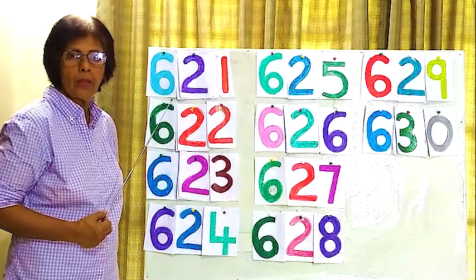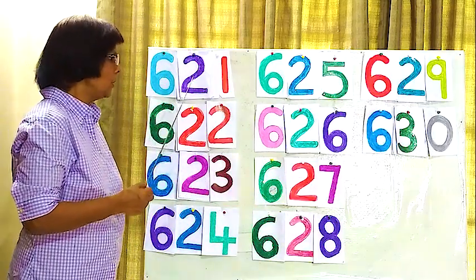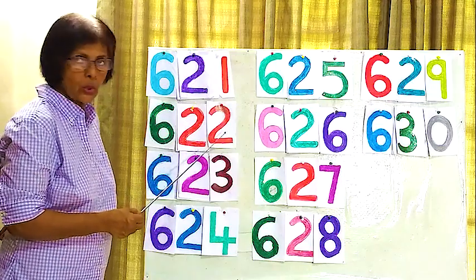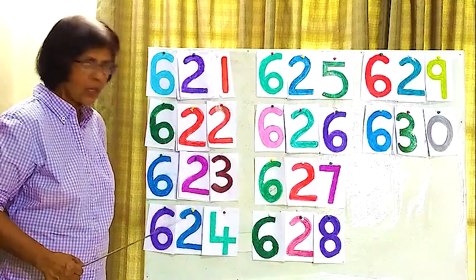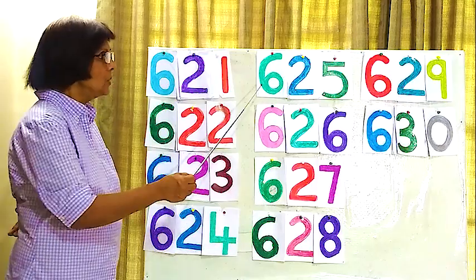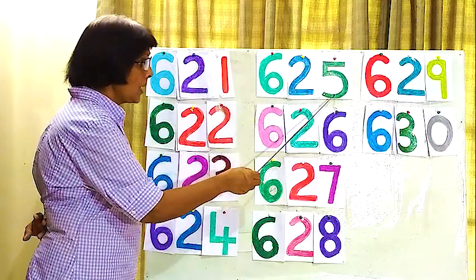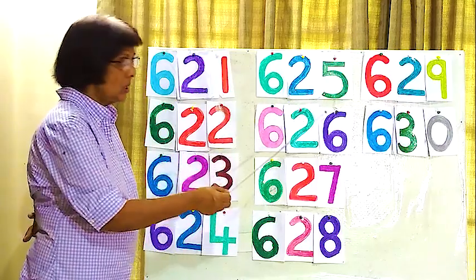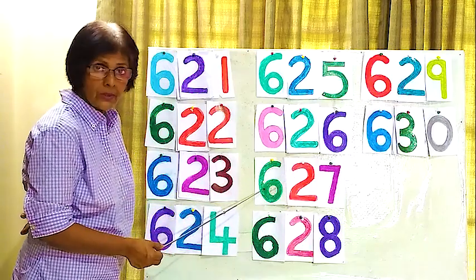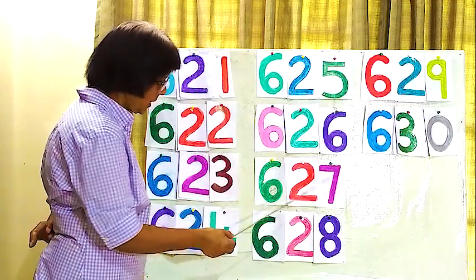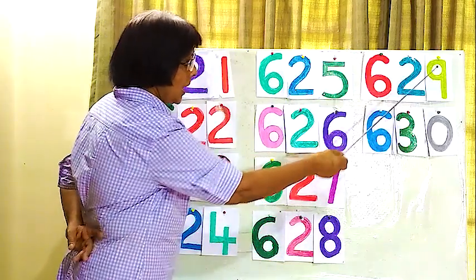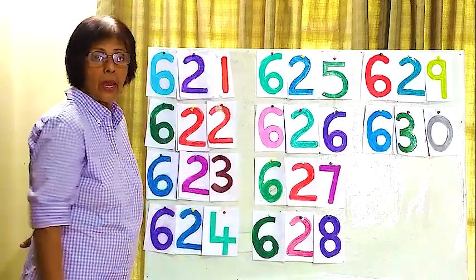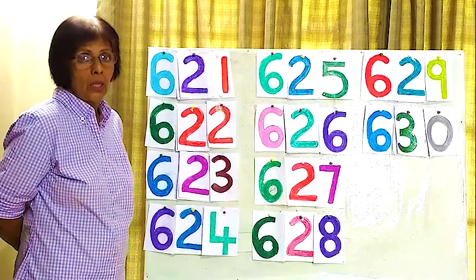Now, we read from the beginning. 621, 622, 622, 623, 624, 625, 626, 626, 628, 629, 629, 630.